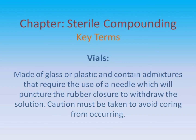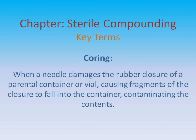Vials: made of glass or plastic, and contain admixtures that require the use of a needle, which will puncture the rubber closure to withdraw the solution. Caution must be taken to avoid coring from occurring. Coring: when a needle damages the rubber closure of a parenteral container or vial, causing fragments of the closure to fall into the container, contaminating the contents.